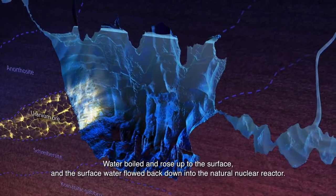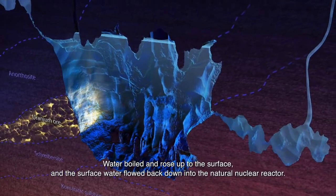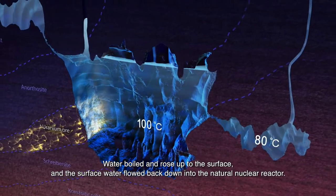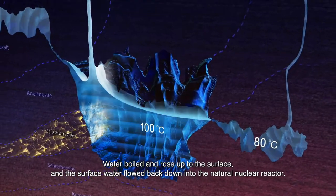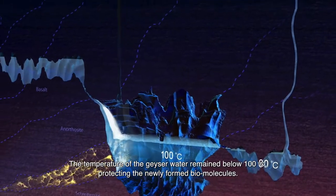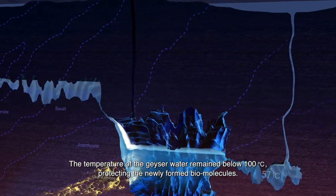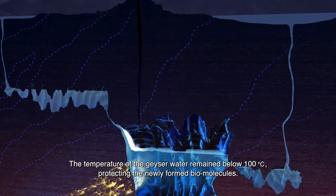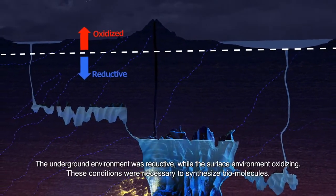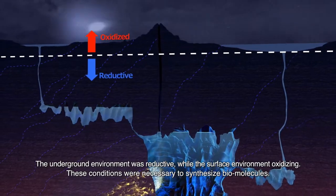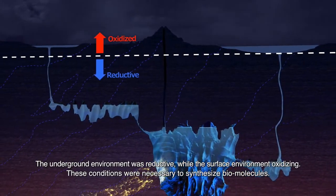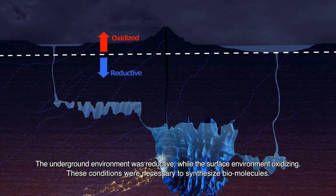Water boiled and rose up to the surface, and the surface water flowed back down into the natural nuclear reactor. The temperature of the geyser water remained below 100 degrees, protecting the newly formed biomolecules. The underground environment was reductive, while the surface environment was oxidizing — conditions necessary to synthesize biomolecules.